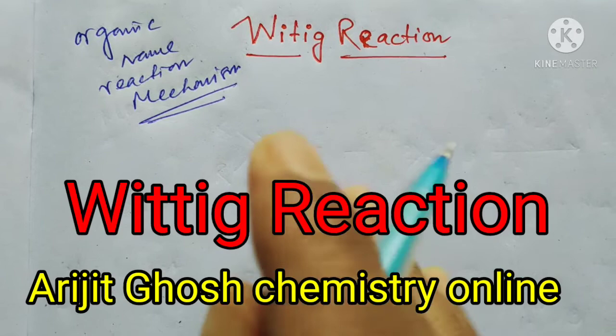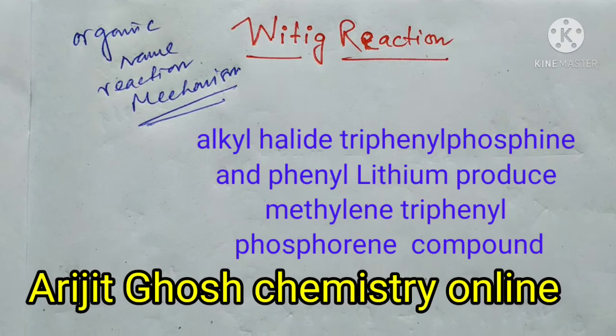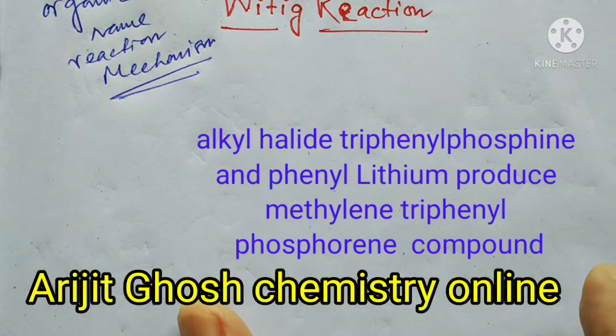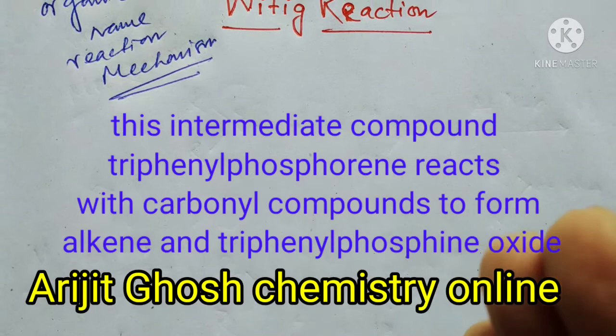What is Wittig reaction? When alkyl halide, triphenyl phosphine, and phenyl lithium react to form methylene triphenyl phosphorane, an intermediate compound, this then reacts with carbonyl compounds to form alkene and triphenyl phosphine oxide. Now I'll show you the reaction.